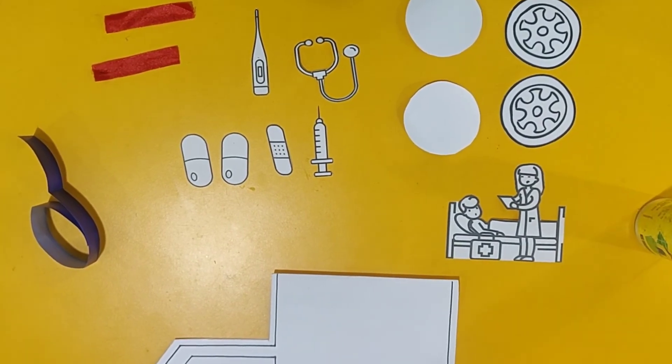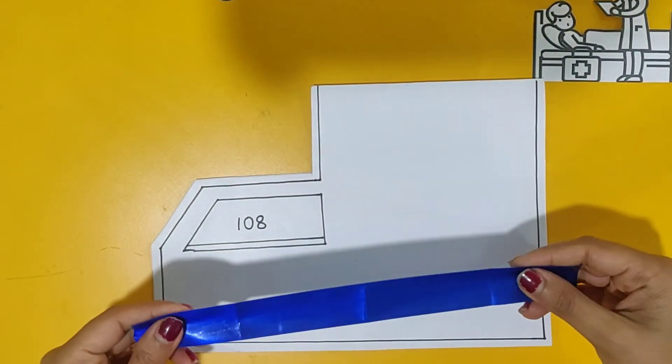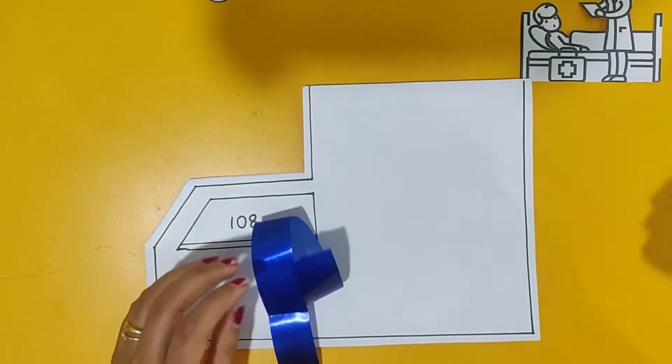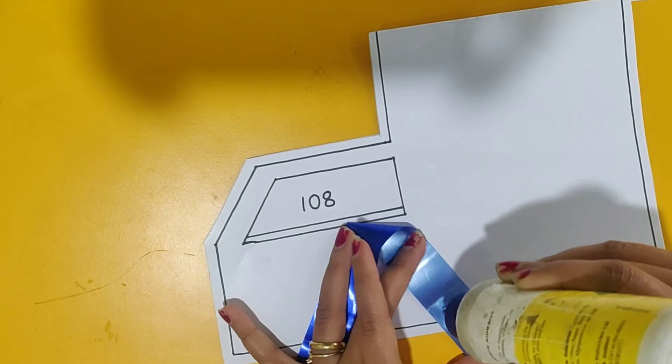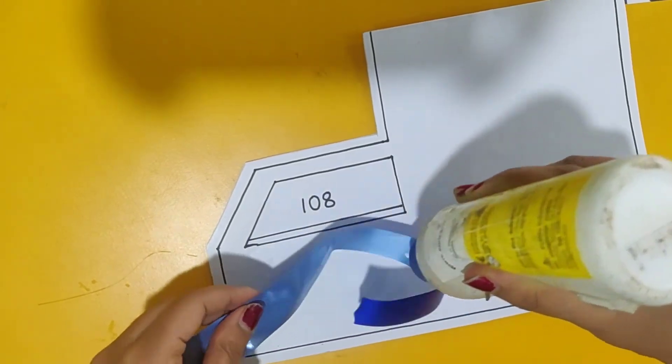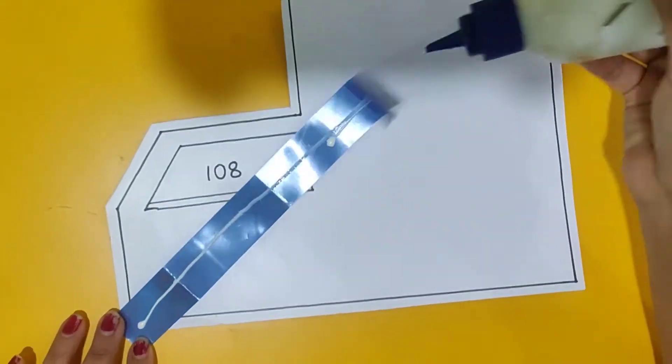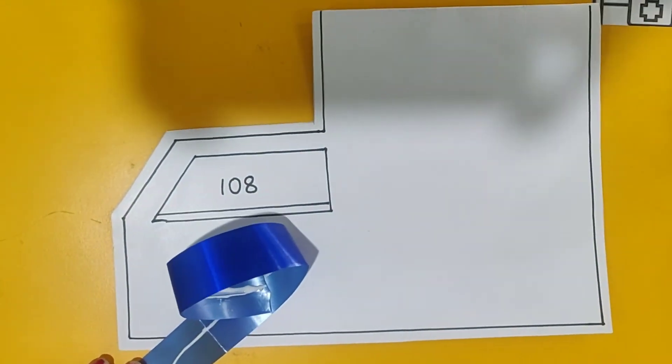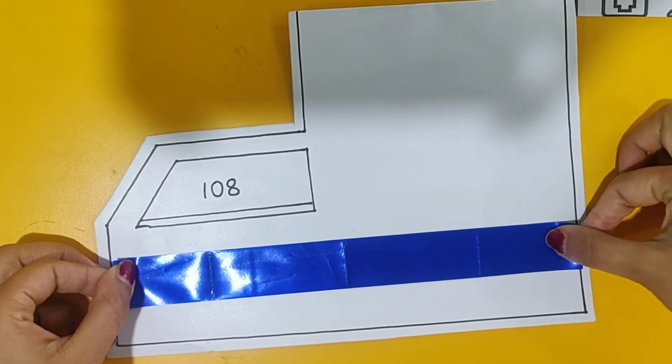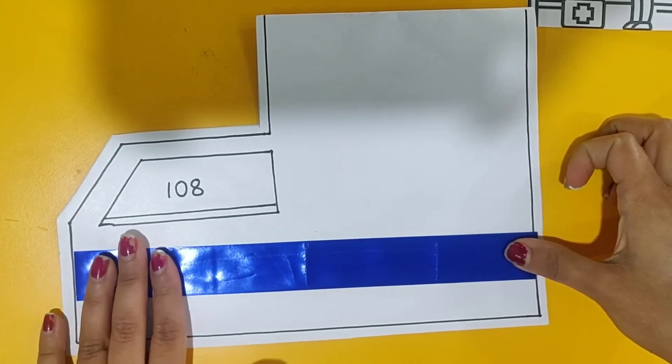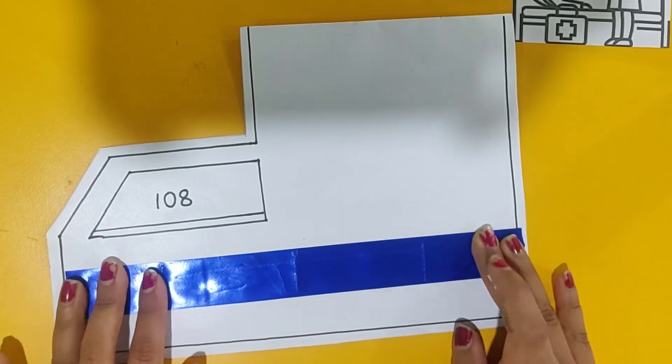So, let's begin with the activity. So, we are going to take the blue color ribbon and put some fevicol like this and now we are going to stick it like this and with gentle hands just tap it. See that it comes in a straight line.